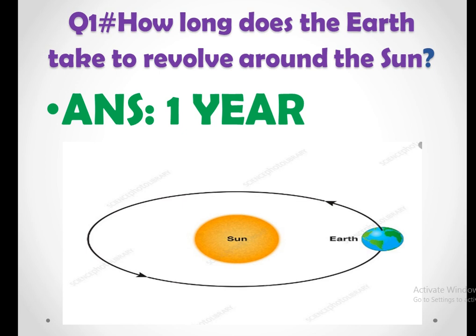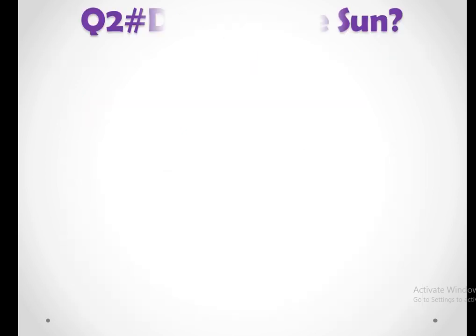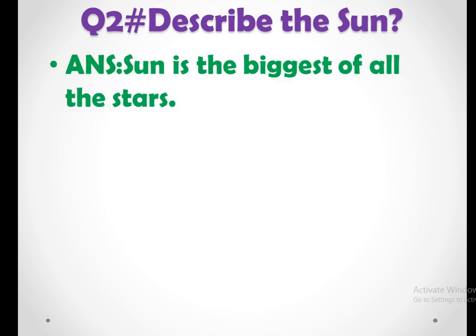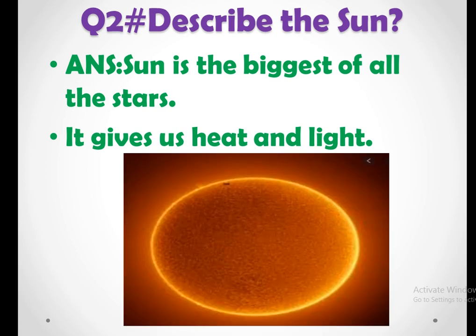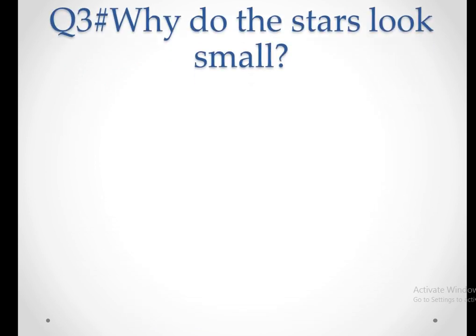Second question is describe the Sun and the answer is Sun is the biggest of all the stars. It gives us heat and light. What Sun gives us? Sun gives us heat and light. This is the picture of the Sun and Sun is the biggest of all the stars.